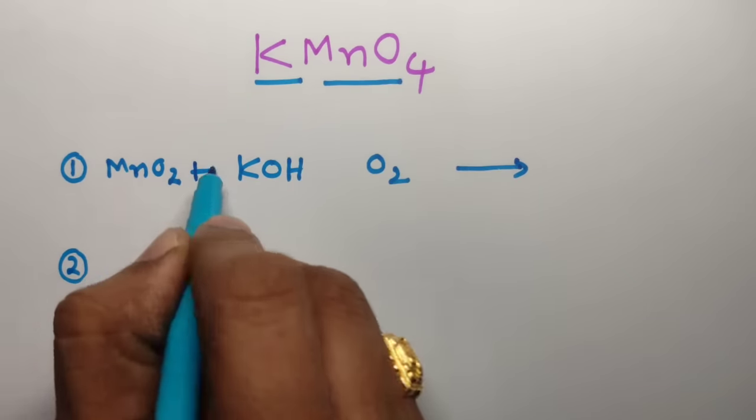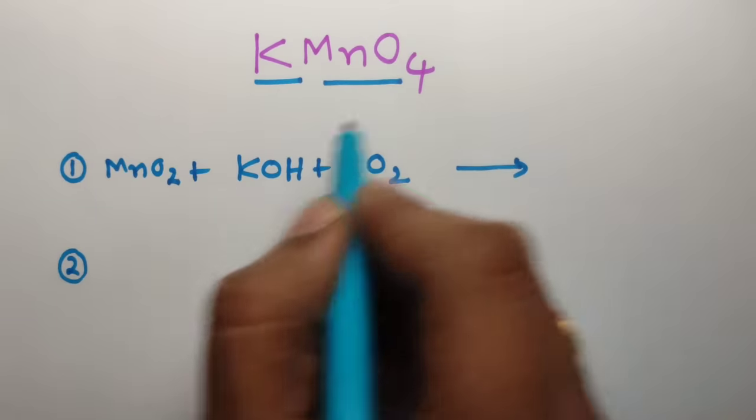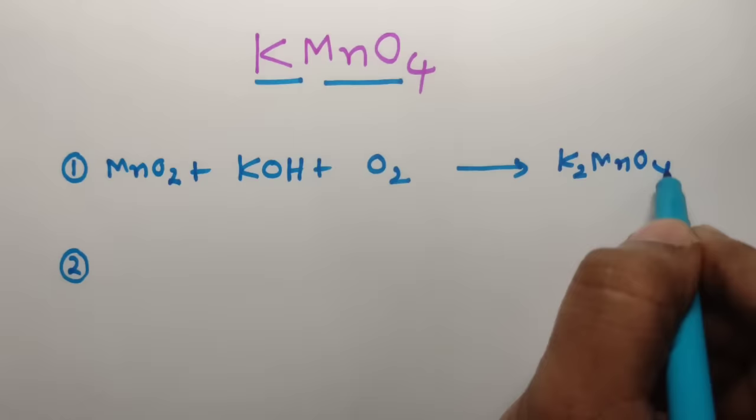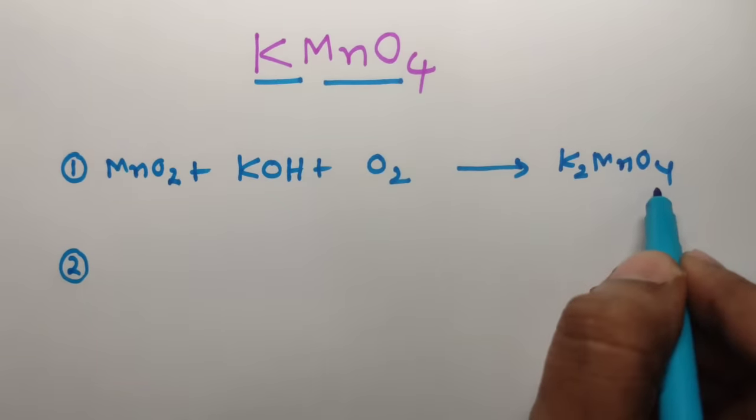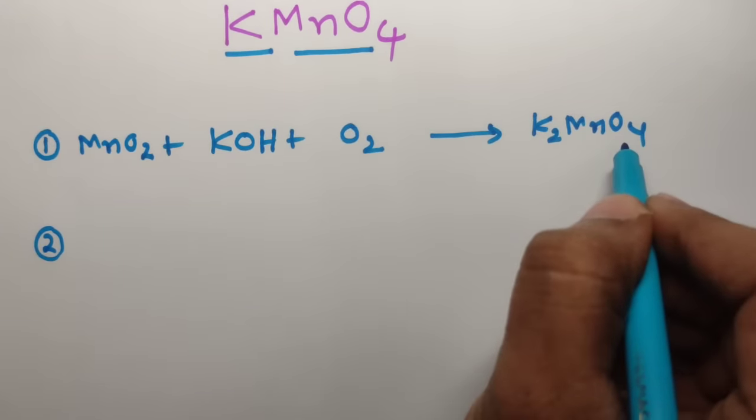This will give rise to the main product. In first step, K2MnO4 is formed - potassium manganate is formed. Now this K2MnO4 you can split.